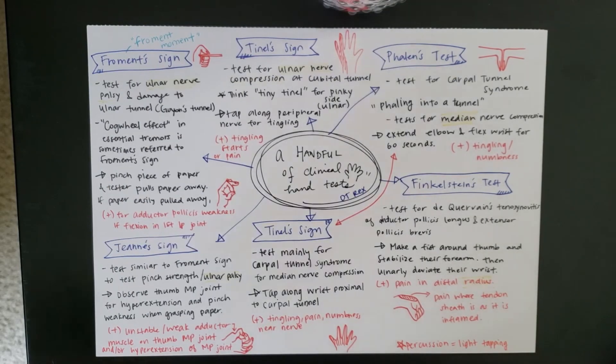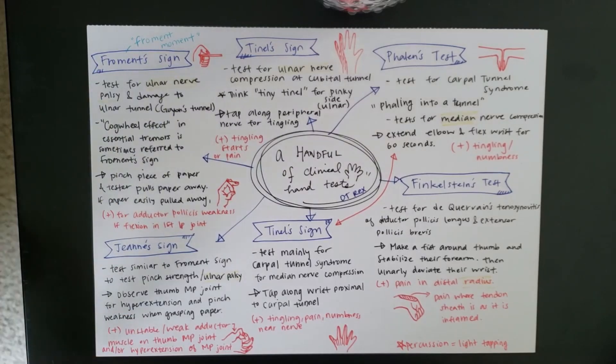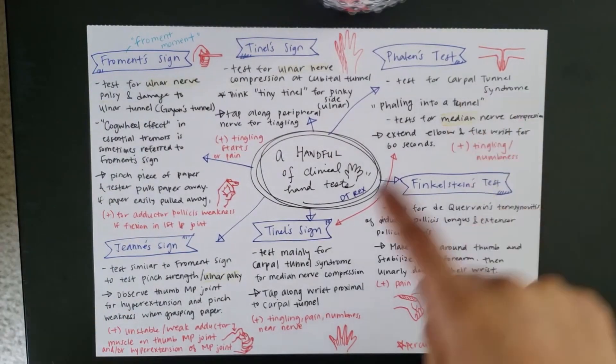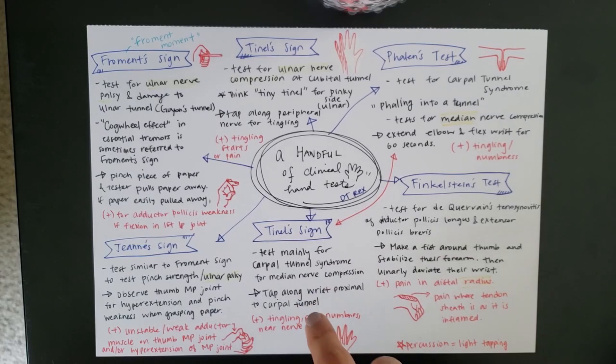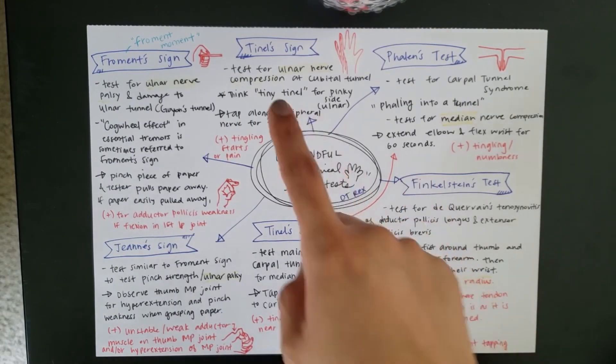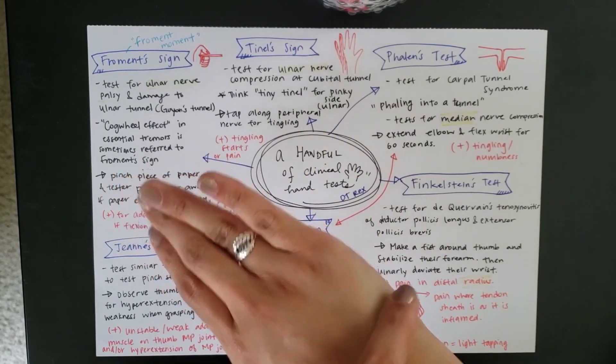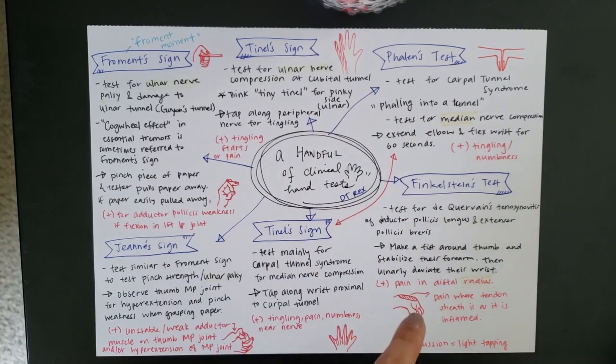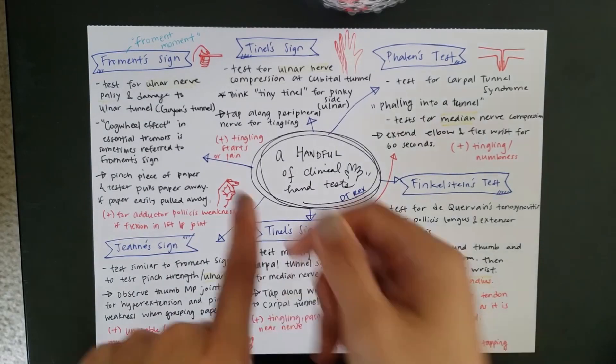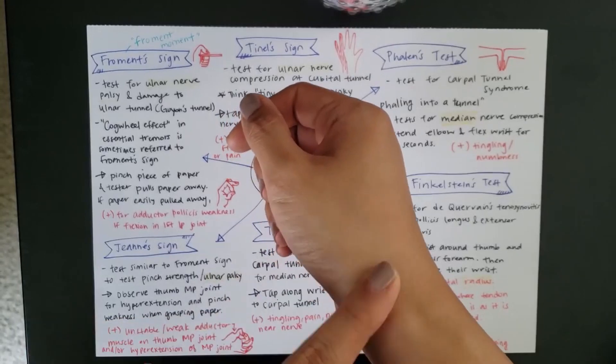Froment's, Jeanne's, same thing, ulnar palsy testing. Phalen's, Tinel's, both tests for median nerve compression, carpal tunnel syndrome. Tinel's can also test for ulnar nerve compression of the cubital tunnel. And Finkelstein's is, all by itself, testing on the radial side for De Quervain's tenosynovitis.